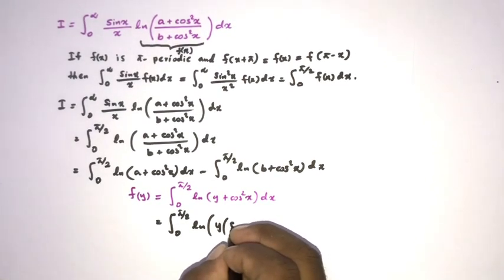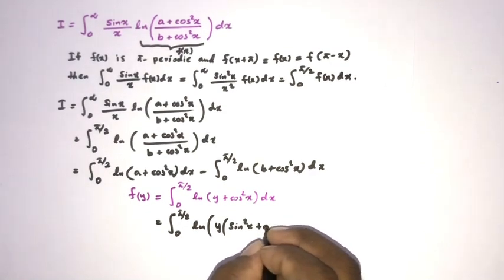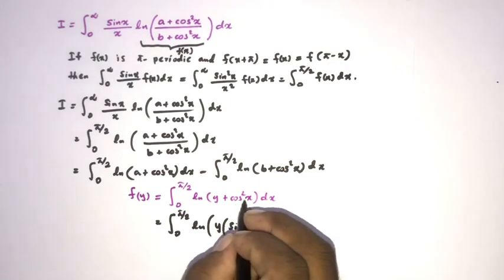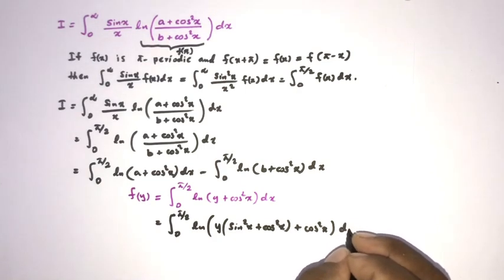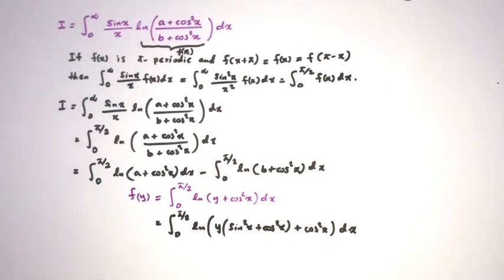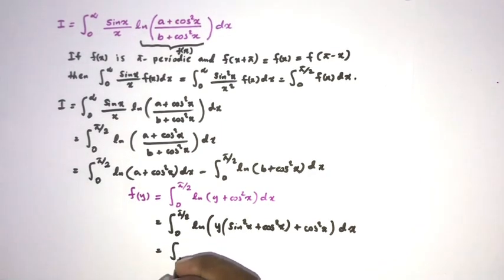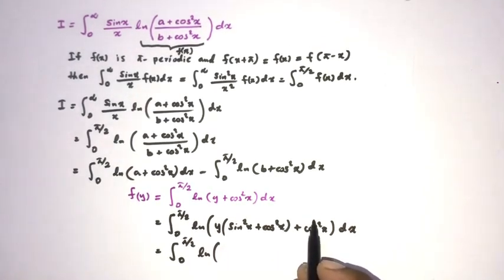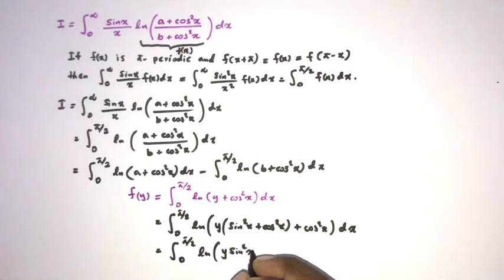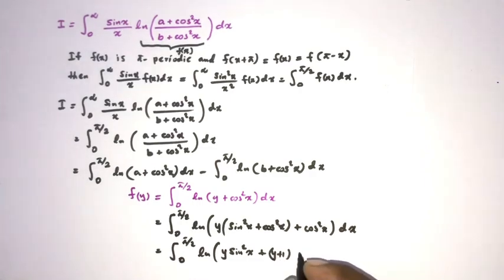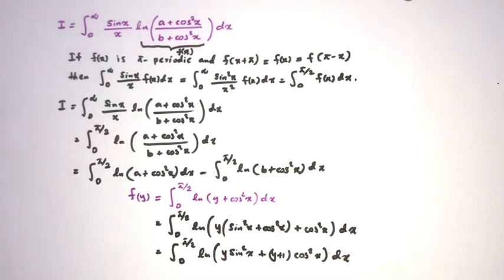So we have: the integral from zero to pi/2 of natural log of (y·sin²x + (y+1)·cos²x) dx. Here cosine squared of x gives us y+1 times cos²x, plus y times sin²x, so we can write y·sin²x + (y+1)·cos²x dx.